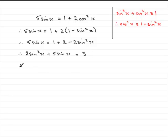And if we now subtract 3 from both sides, we end up with what we've got to show. And that is 2 sine squared x plus 5 sine x minus 3 equals 0. A quadratic then in sine x. Okay, well that brings us to the end of this part of the question.